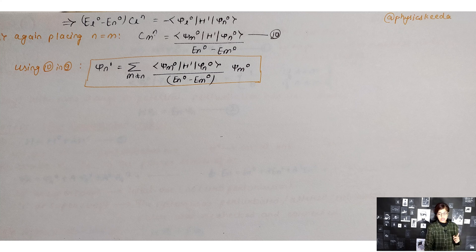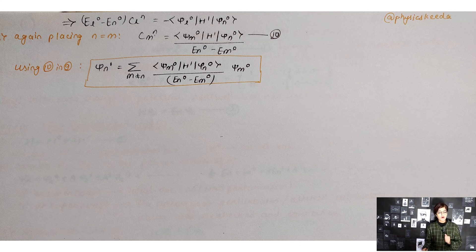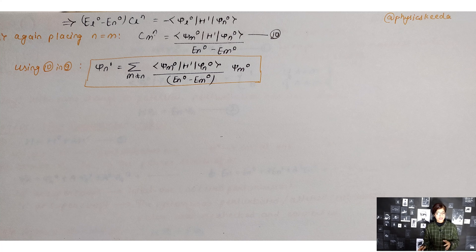Using this 10th equation in the 9th, we get the value of the wave function for the first-order perturbed state — the first-order correction. The denominator term will not vanish as long as the unperturbed energy spectrum corresponding to the energy eigenstates is non-degenerate.